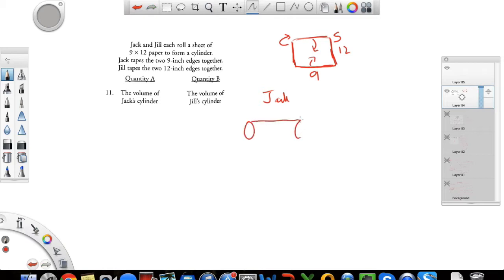And Jack's cylinder, in Jack's case, he taped two 9 inches edges together. So the 9 inches edges are stitched together. So basically your height in this case is 9. And the circumference of your top and the base would be 12. So important to know, this is not the radius, this is the circumference.